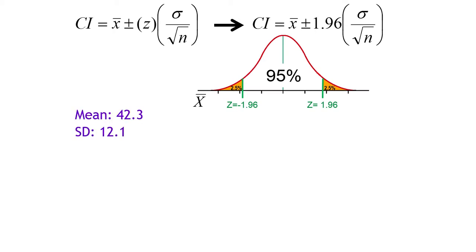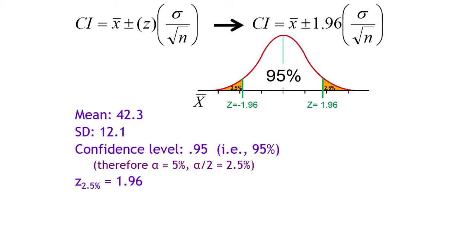So my z-score is 1.96. Here's how I set up the confidence interval calculations. My mean, plus or minus my z-score, times, all in parentheses, the standard deviation of the population divided by the square root of 500. That gives us a margin of error of 1.06 and our confidence interval of 41.24 and 43.36.